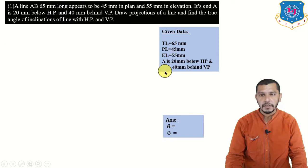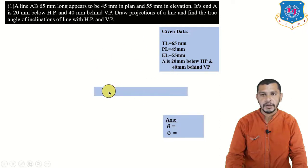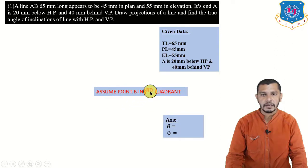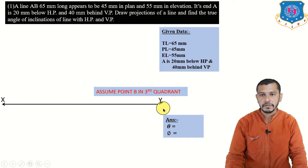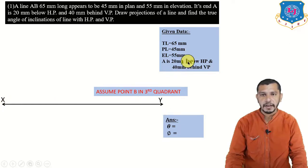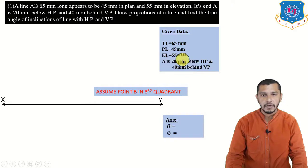The quadrant of point B is not given, so first we have to assume the quadrant of point B. Since point A is in the third quadrant, we will assume point B in the third quadrant also. Now let's start the problem. First of all, draw the XY reference line, then draw the plan and elevation of point A since its locus is given.